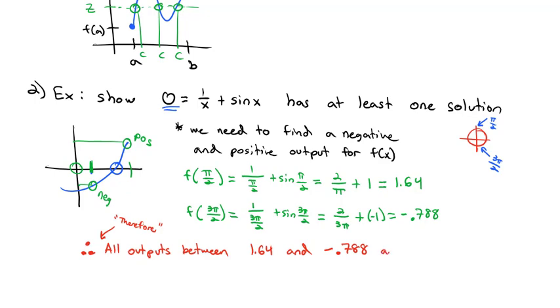Therefore, by the way these three triangles these three dots in a triangle that means therefore, it's a nice shorthand for mathematicians. Therefore we know that all outputs between 1.64 and negative 0.788 are possible, specifically they're possible when x is between 3 pi over 2 and pi over 2. Therefore 0 which is between those values is a solution. The intermediate value theorem tells us that there has to be a result in output between 1.64 and negative 0.788. 0's between there therefore 0 is a solution.